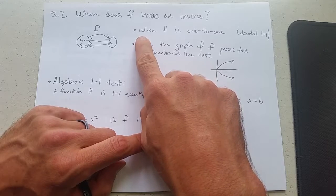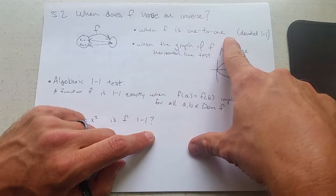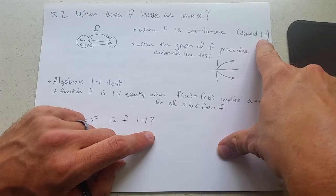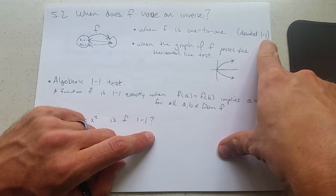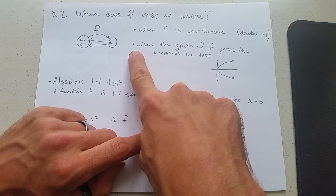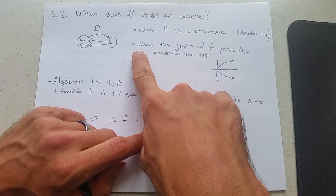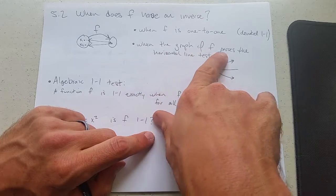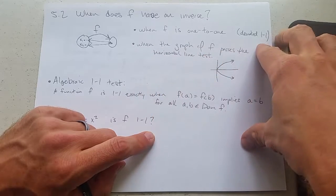So f has an inverse when f is 1 to 1. We're gonna be lazy and write 1-1, which looks a lot like capital H. And if you know what the graph looks like, you have an inverse when the graph passes the horizontal line test.